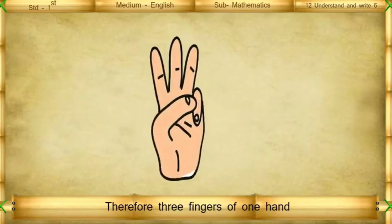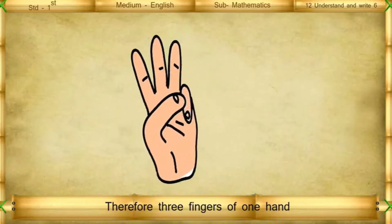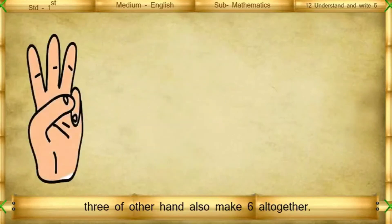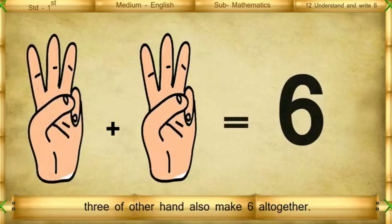Therefore, 3 fingers of one hand, 3 fingers of other hand also make 6 altogether.